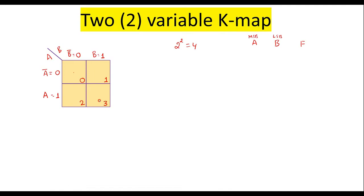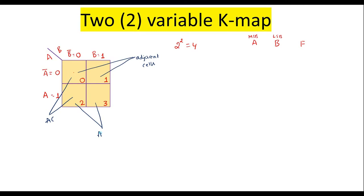Grouping of ones or zeros is always done with respect to adjacent cells. Cell 0 and cell 1 are adjacent cells. Cell 2 and cell 3 are also adjacent cells. However, cell 0 and cell 3 are not adjacent cells. Similarly, cell 1 and cell 2 are not adjacent cells.